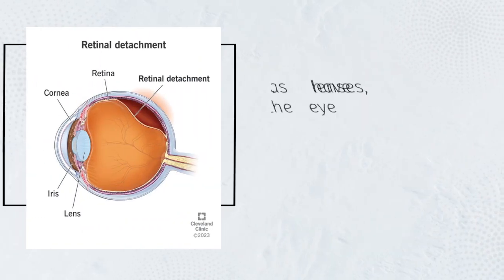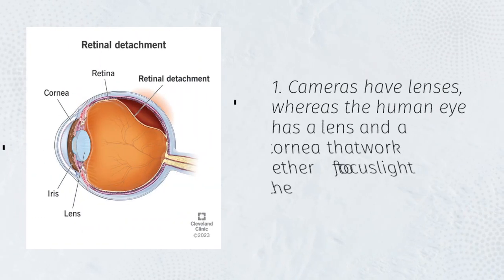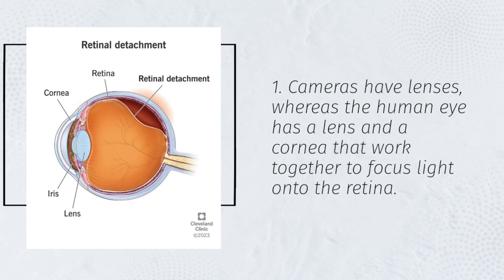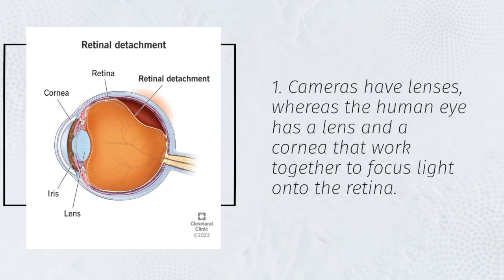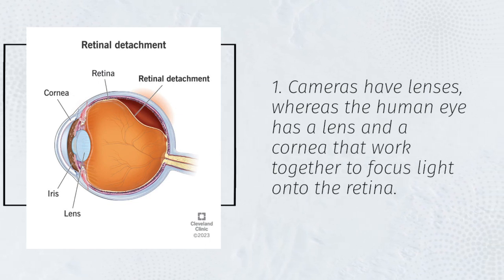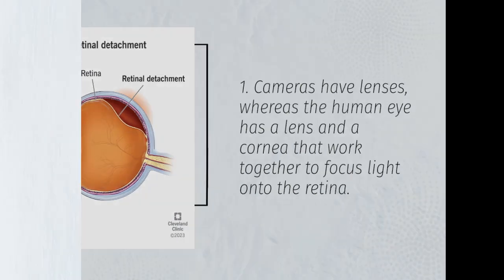Cameras have lenses, whereas the human eye has a lens and a cornea that work together to focus light onto the retina.